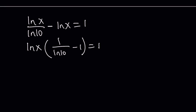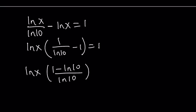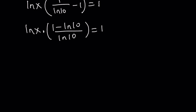Taking out ln x, we get 1 over ln 10 minus 1 equals 1. We can make a common denominator: 1 minus ln 10 over ln 10. And now we can go ahead and divide both sides by that quantity, or multiply by the reciprocal, to get ln x by itself.